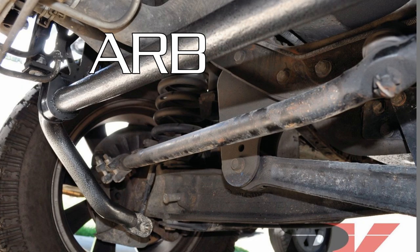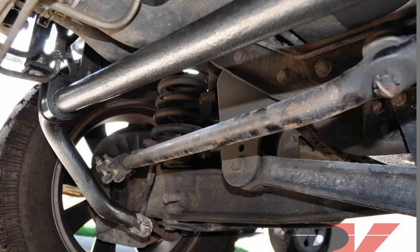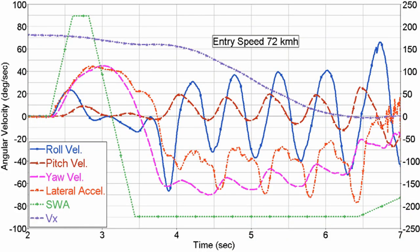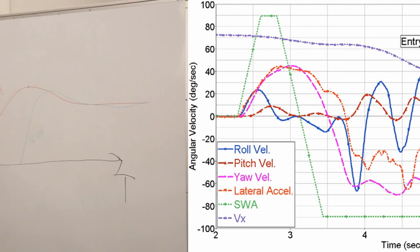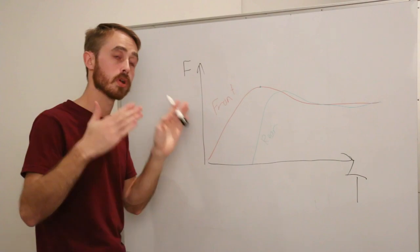Stiffening an anti-roll bar also increases the roll frequency of that axle, which has effects that are more complicated than I can explain in 30 seconds. Check out the other video for that one.